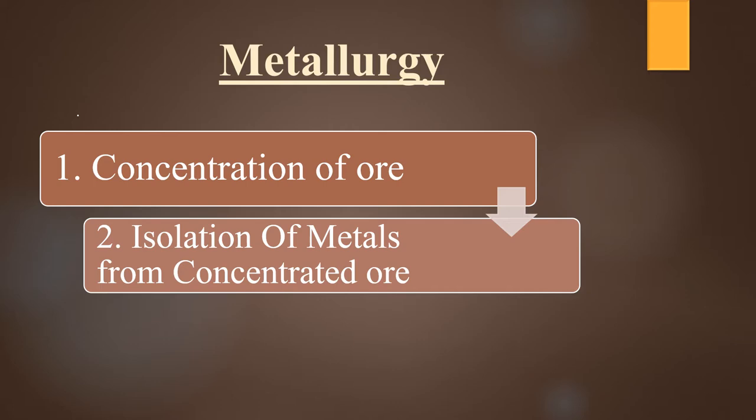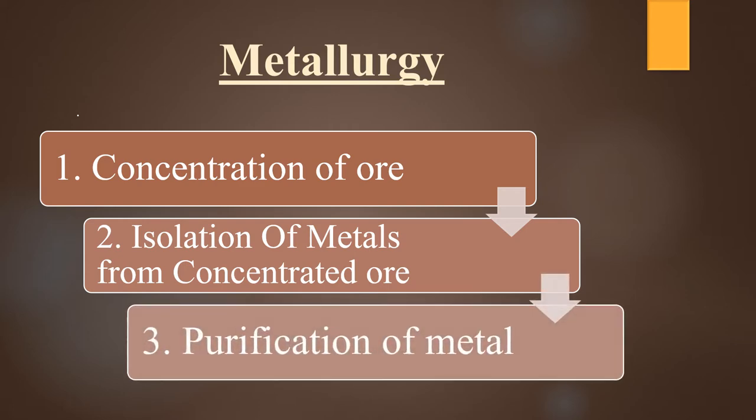The second step is isolation of metals from the concentrated ore. After concentrating the ore in the first step, we isolate our metal in the second step. The third step is purification of metal — once the metal is isolated, it is then purified. So the three steps of metallurgy are concentration, isolation, and purification.